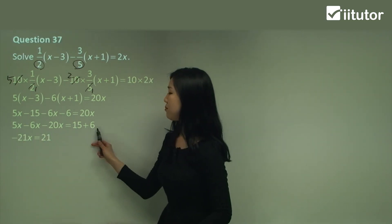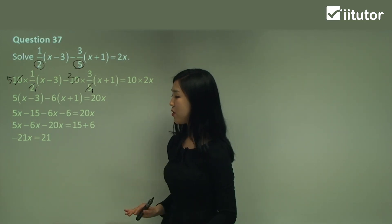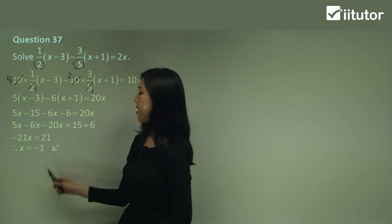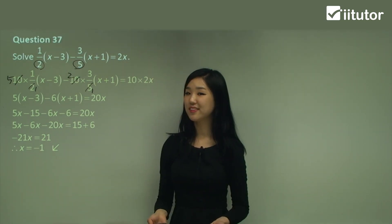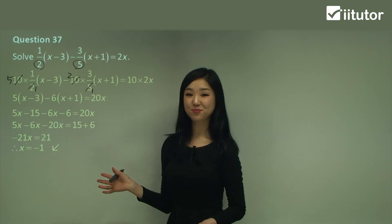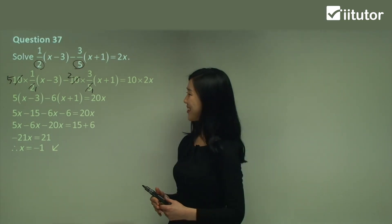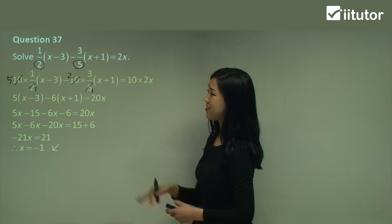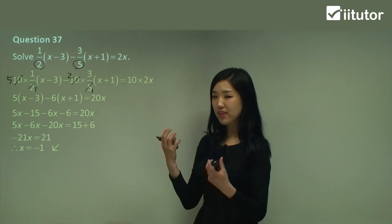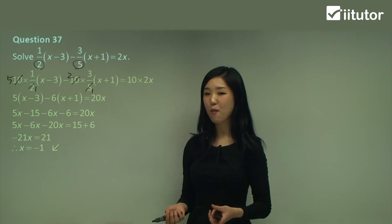Now 5x minus 6x is negative x, minus 20x is negative 21x. And 15 plus 6 is 21. Divide by negative 21 — 21 divided by negative 21 is negative 1. So x = negative 1. For those who paused and tried it themselves — did you get that one? If you did, excellent, give yourself a pat on the back. And that's pretty much it for equations with more than one fraction.